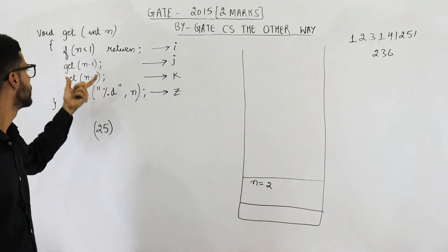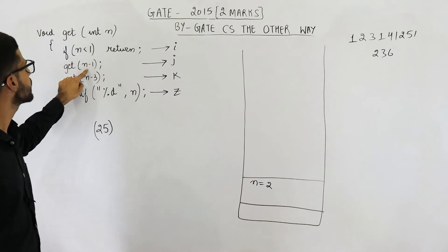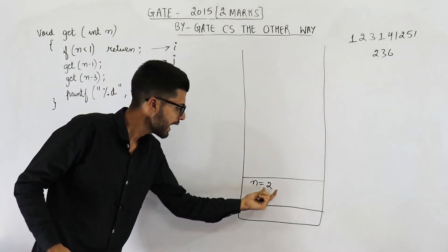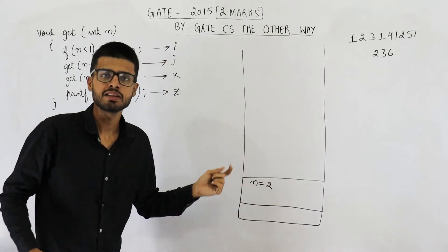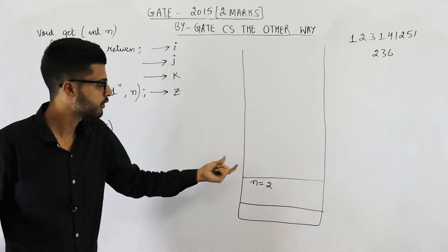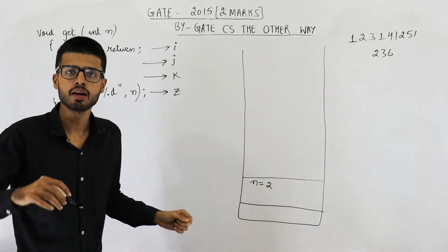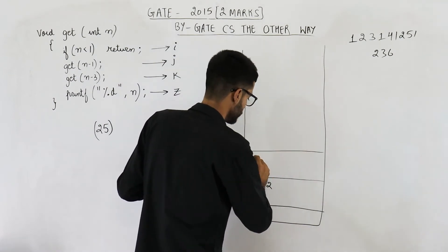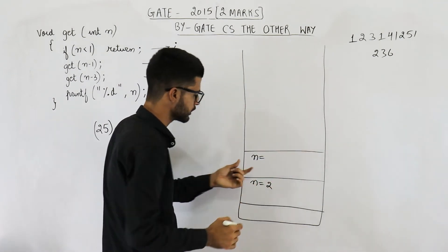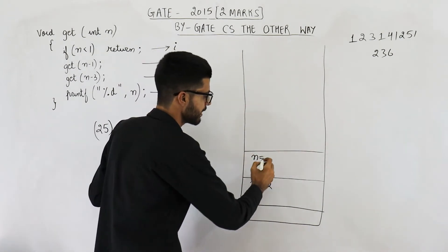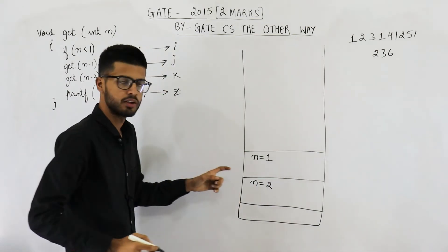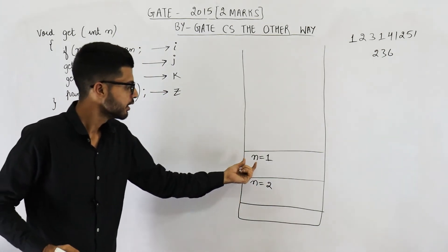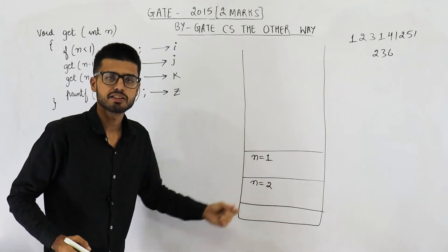The next line says get(n minus 1). So function is called with n minus 1 meaning 2 minus 1 = 1. So function get is called with 1 as parameter. In the new function, n will get a value 1.